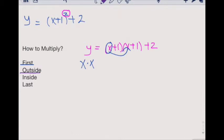Outside then tells us to take our first element from our first quantity and multiply it by the second element in the second quantity. In this case, we will have x times one.